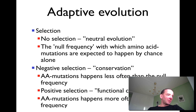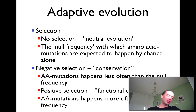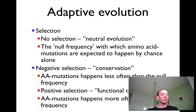You can calculate adaptive evolution by looking at the expected amino acid change frequency by chance, which depends on the codon. In general, you have about 64 codons coding for different amino acids. In most cases, if the third position of a codon changes, in more than half the cases you do not change the amino acid. But in the first or second position, you almost always change the amino acid. So you have about a one-third chance of not changing the amino acid.